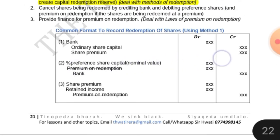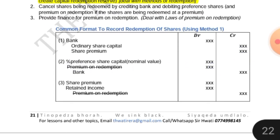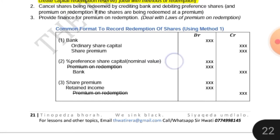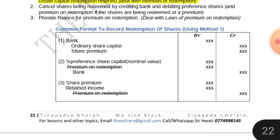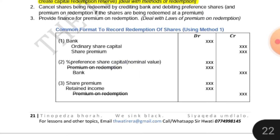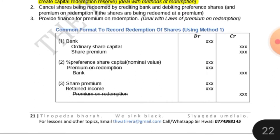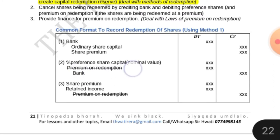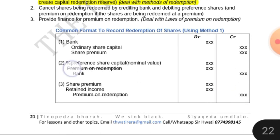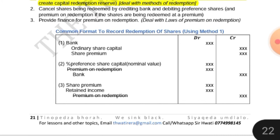If there is a premium on redemption, we also debit it. So we debit the percentage preference shares that we are redeeming — their nominal value is debited — and the premium on redemption, if we are redeeming the shares at a premium, is recorded on the debit side. Then we credit the bank account. If on stage two we have premium on redemption, stage three is necessary to provide finance for it. So we credit the same amount of premium on redemption such that the two premium on redemption entries cancel out.